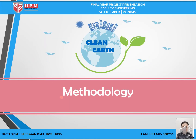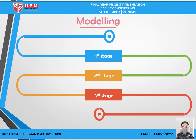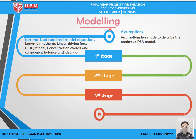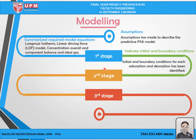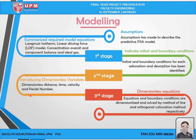Let's move on to the methodology. This chapter explains the methods used to carry out the study. For the modeling part, first I made the assumptions, then summarized the required model equations, and indicated the initial and boundary conditions for adsorption and desorption. After that, dimensionless variables such as distance, time, velocity, and Peclet number were introduced. The dimensionless equations and boundary conditions are then solved by the method of lines and orthogonal collocation method respectively.